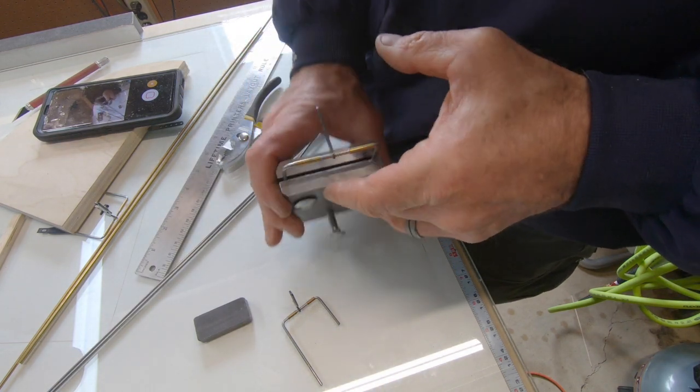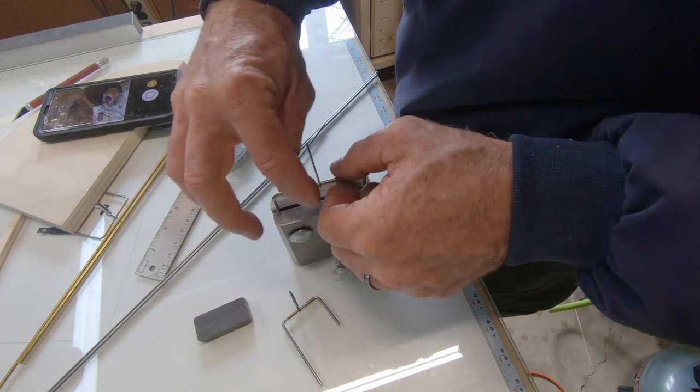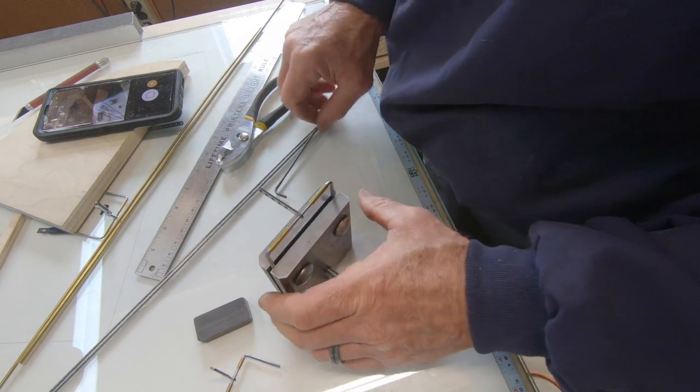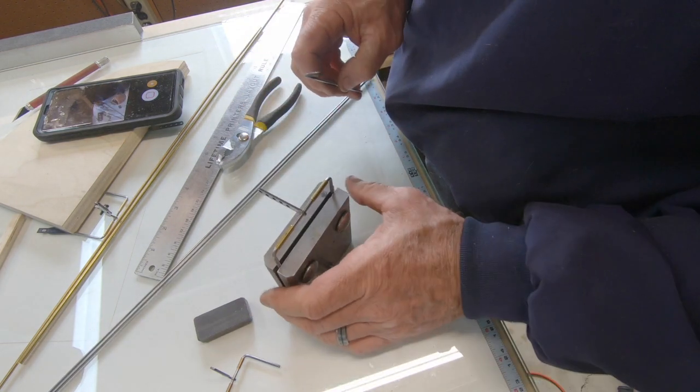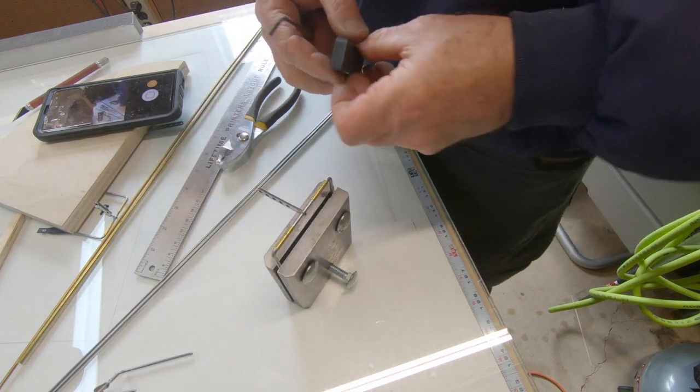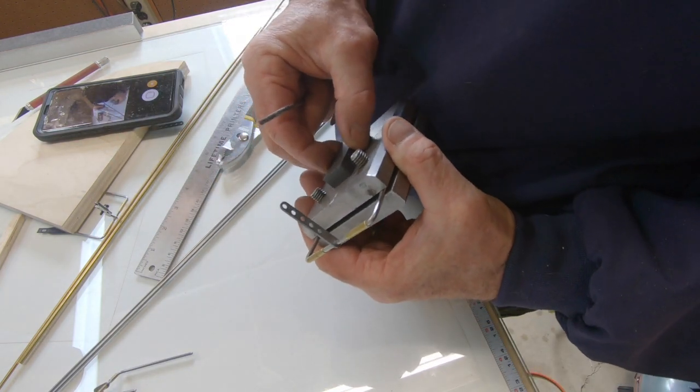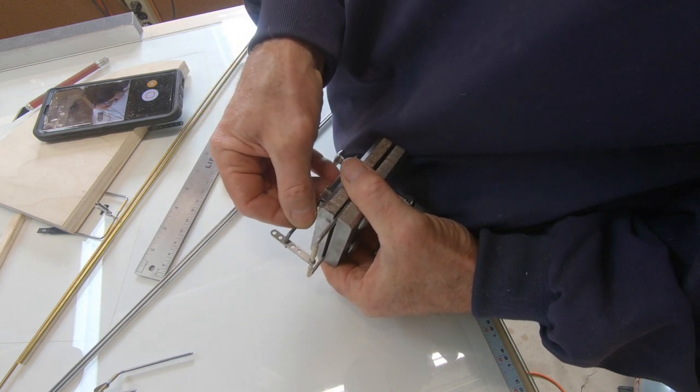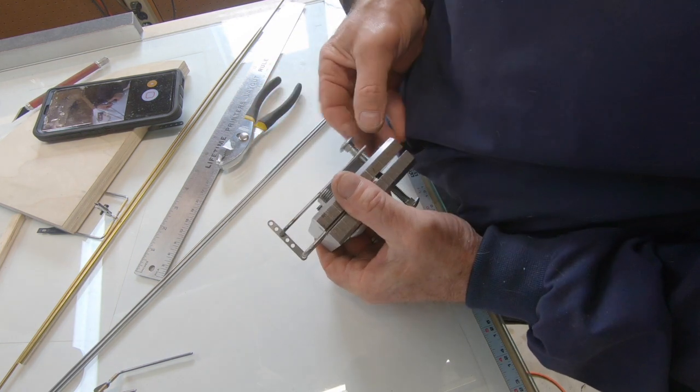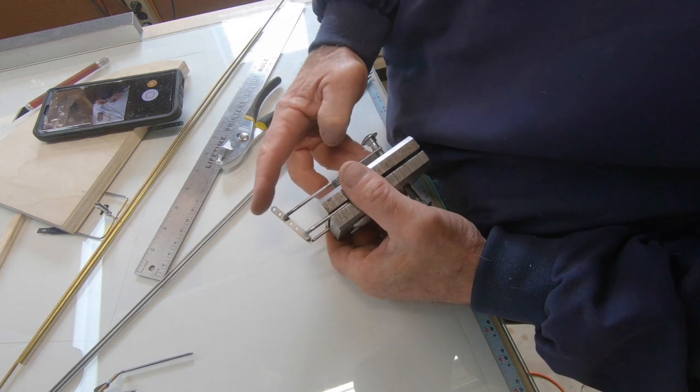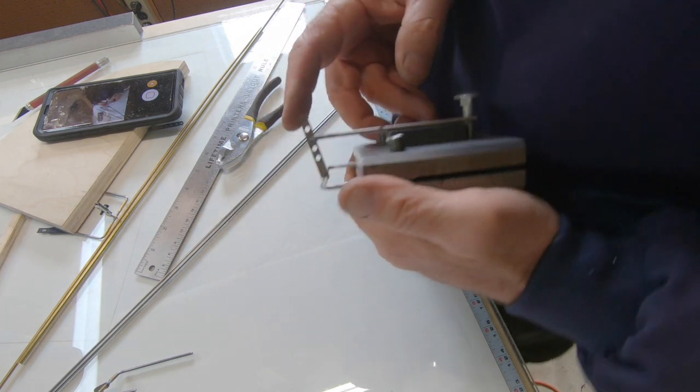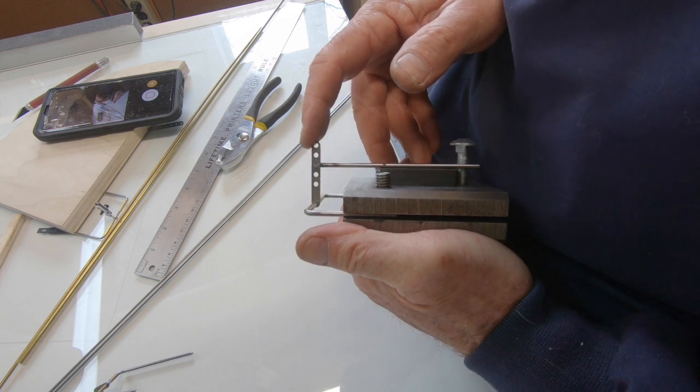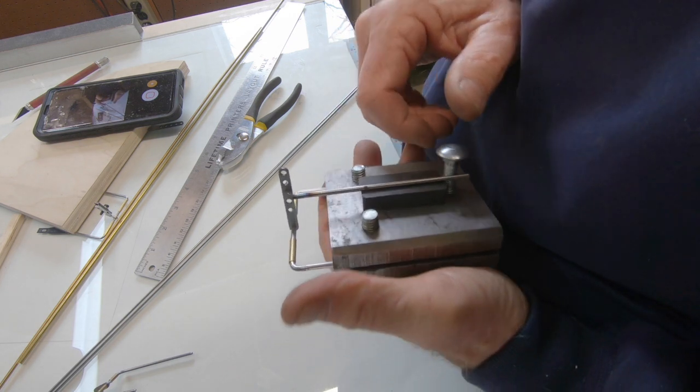Okay, so I get the horn at this point. The next thing I want to do is put some flux on it. Once I get the flux on it, this little magnet sits right there and the magnet is what's going to hold this horn at 90 degrees, so see how you can adjust that. You can put this thing anywhere you want it and that magnet will hold it tight enough to where you can braise it.